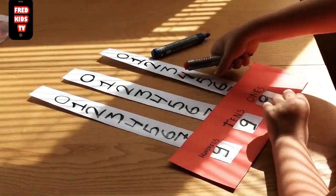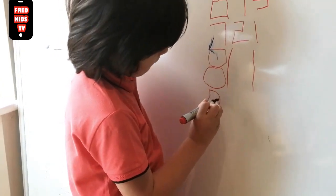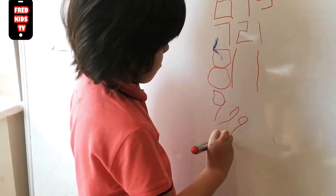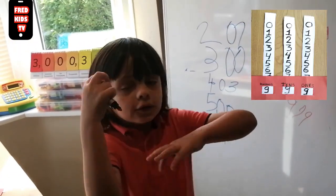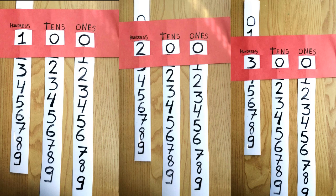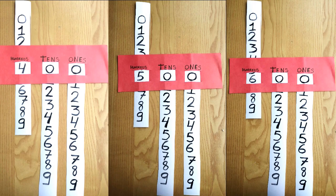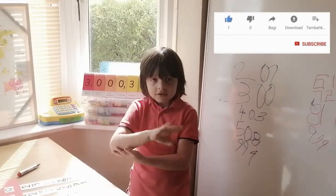Nine hundred and ninety-nine! We can learn one hundred, two hundred, all the way to nine hundred and ninety-nine. We can also learn to skip count by one hundreds to nine hundred: one hundred, two hundred, three hundred, four hundred, five hundred, six hundred, seven hundred, eight hundred, nine hundred. I hope you enjoyed the video, guys!